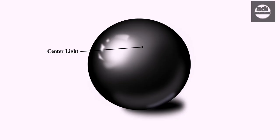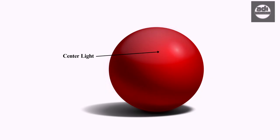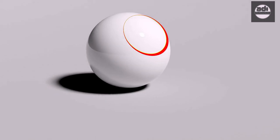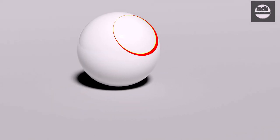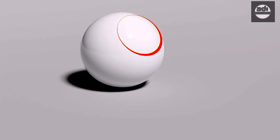The center light is that surface or plane or part of the subject that faces the light source most directly. The position of the center light on the subject does not change with change in the point of view.